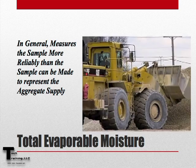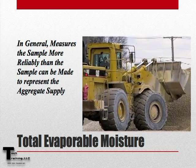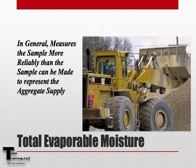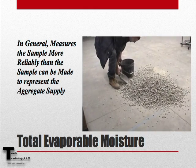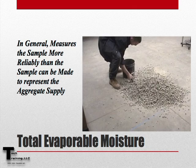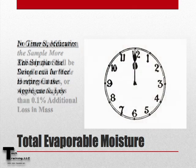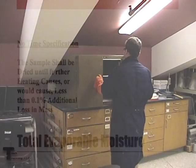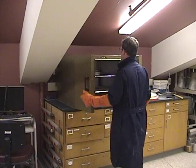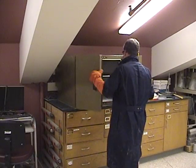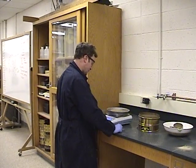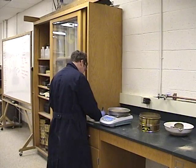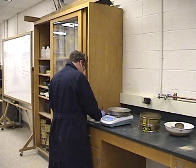In general, this method measures the sample more reliably than the sample can be made to represent the aggregate supply. There is no time specification for AASHTO T255. Instead, the sample is dried until further heating causes or would cause less than 0.1% additional loss in mass.